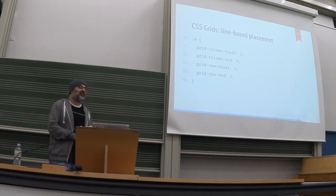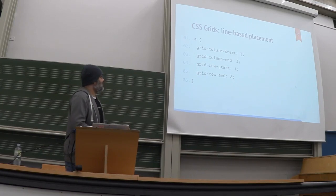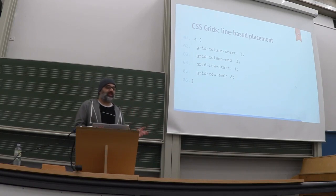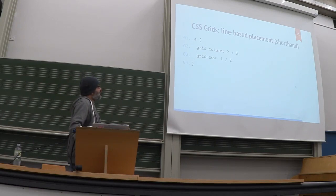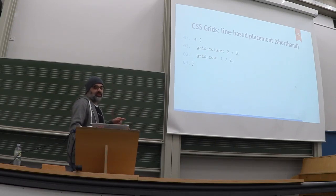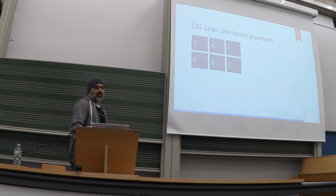Within the grid you can place your items wherever you want. You say where your item should start and end using grid-column and grid-row with start and end line numbers. You can use the shorthand form: starting line, end line for column, then starting line, end line for row. If you do this for all children, you can place them in any order visually, even though the HTML source order is a, b, c, d, e.